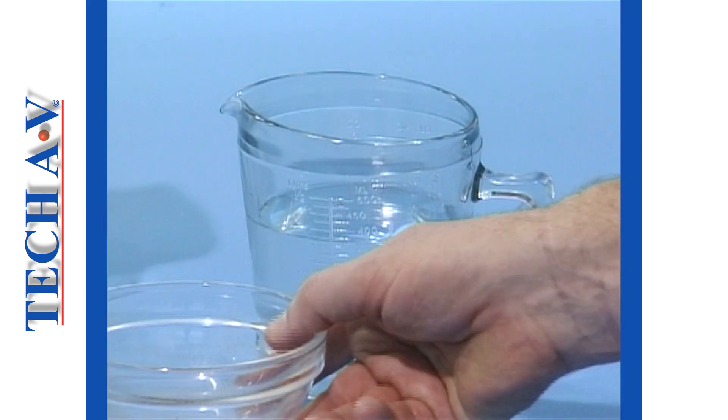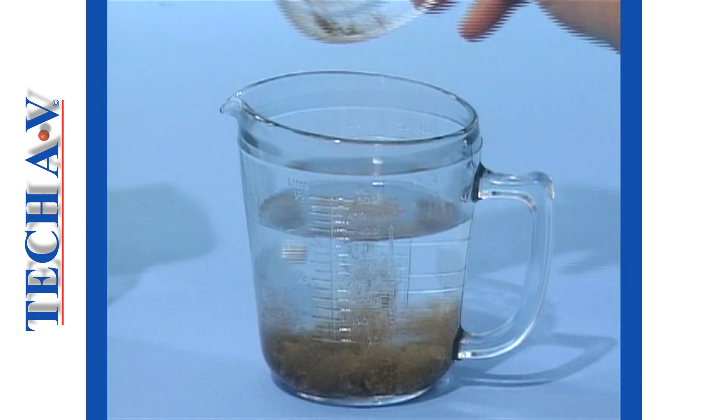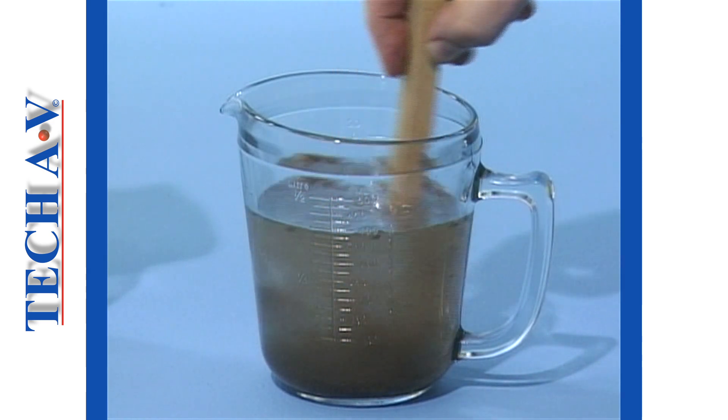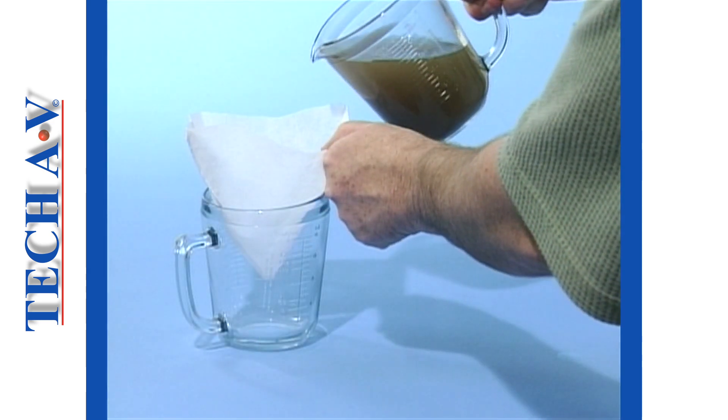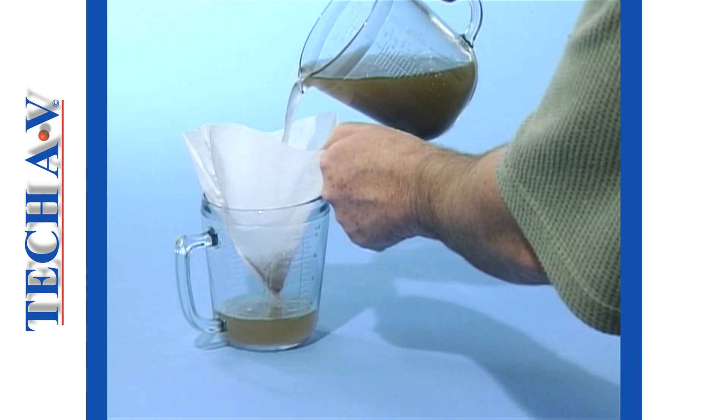The principle of filtering can be seen here in this simple demonstration. Into a sample of water, we'll introduce some grit in the form of dirty sand. Now, we'll pour the mixture through a coffee filter, which is basically a form of paper.